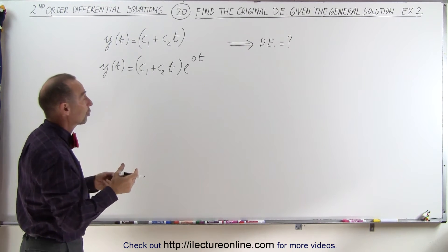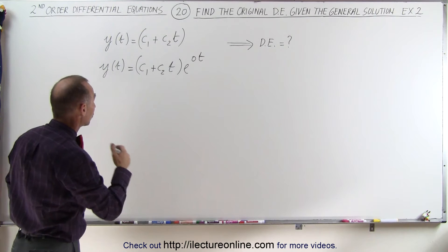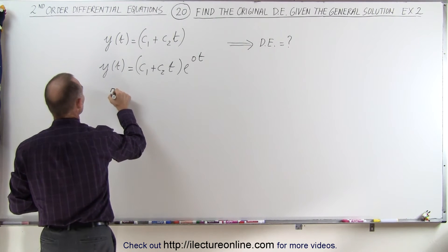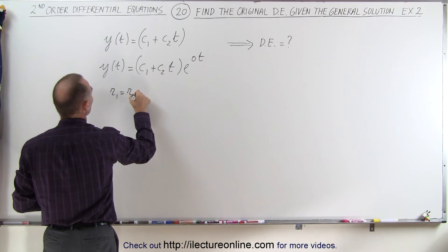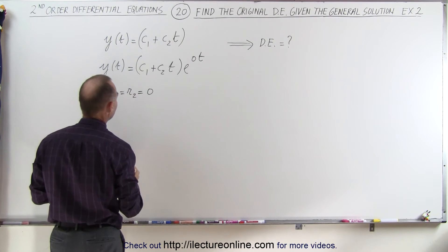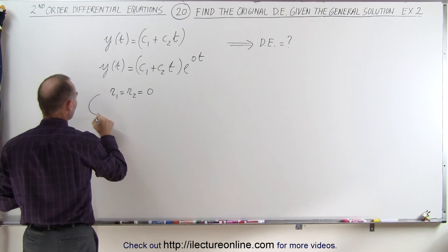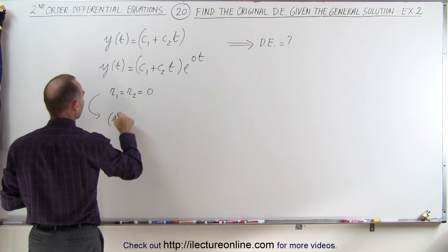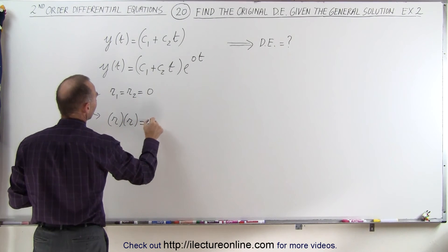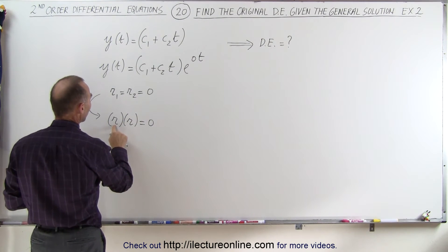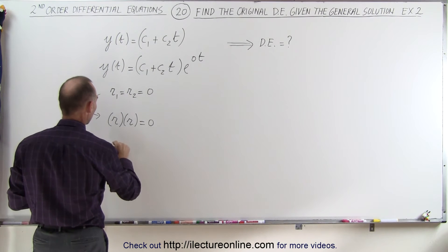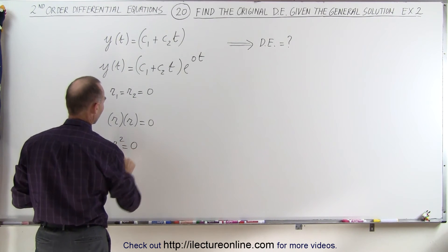Then we can find the differential equation by finding the characteristic roots. We can say that root 1 is equal to root 2, which is equal to 0. And then the characteristic equation becomes r times r is equal to 0, because in this case r can be 0 in both cases, or r squared is equal to 0.